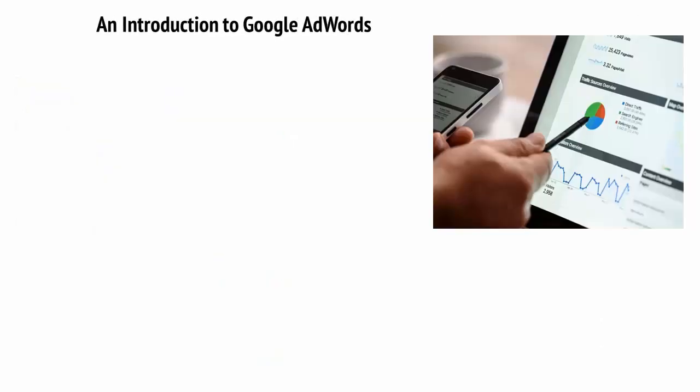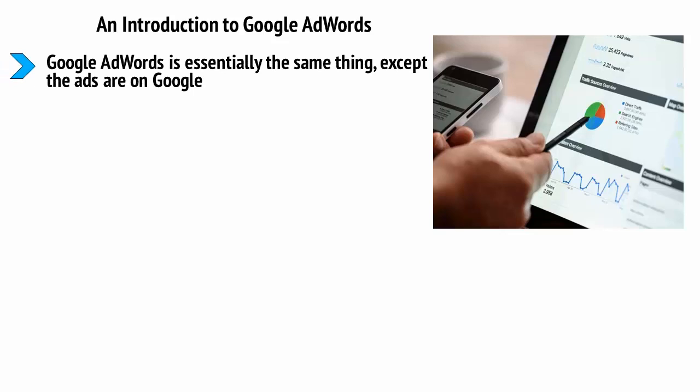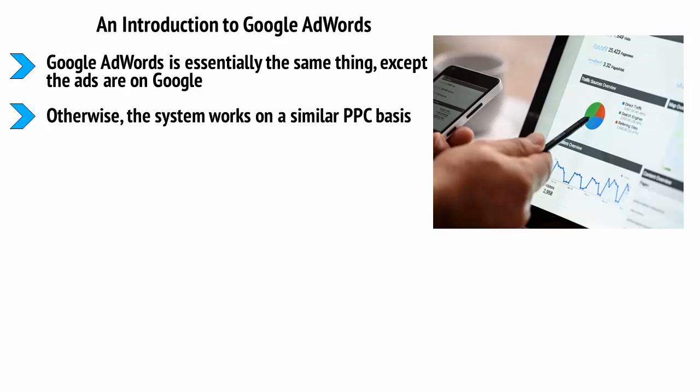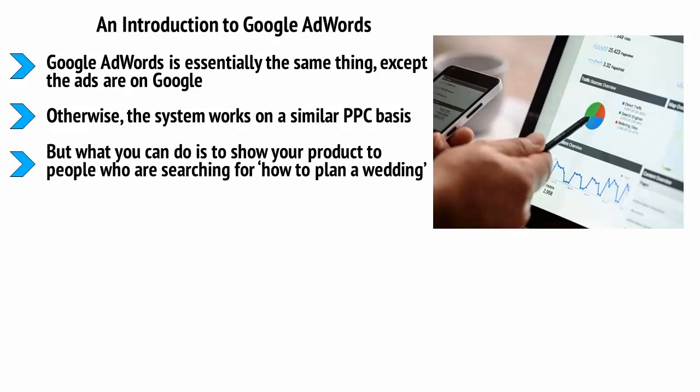An introduction to Google AdWords. Google AdWords is essentially the same thing, except the ads are on Google. The difference is that you are now paying for ads to appear at the top of certain search results under the heading Sponsored Results. Otherwise, the system works on a similar PPC basis. On the one hand, you can't as precisely target the type of person looking for your product — for example, you can't choose to only show it to engaged women. But what you can do is show your product to people who are searching for how to plan a wedding.